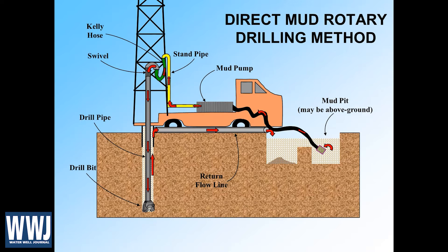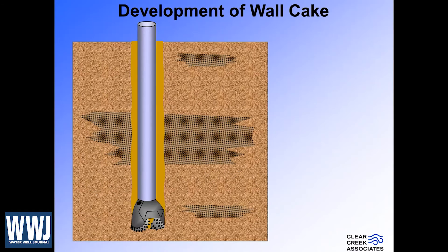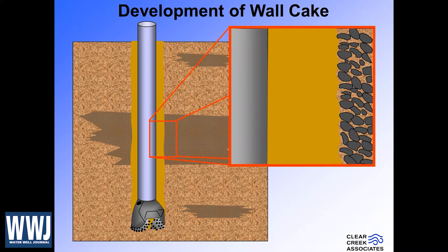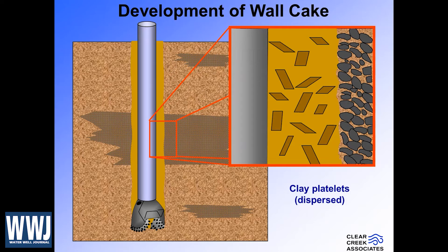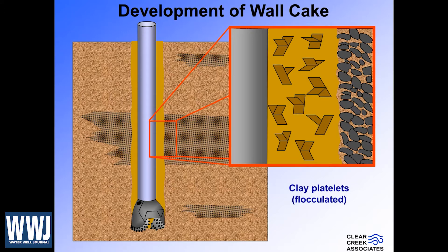The big part of this is the drilling fluid — being able to control and change it. At the microscopic level, there are platelets like little tiny sheets of paper that are the bentonite clay. When they're dispersed, they float around in the fluid mixture. When they flocculate, they stick together, and the viscosity of the drilling fluid becomes higher even though we didn't add additional bentonite. That means we can carry cuttings out of the borehole better — at the same uphole velocity, we carry more cuttings, which is what we want.